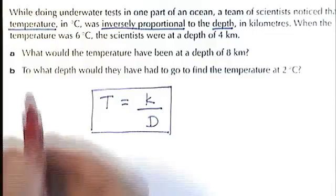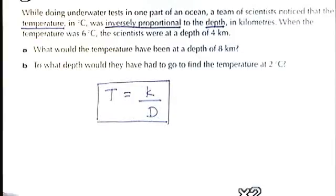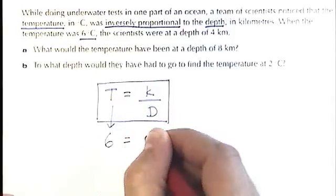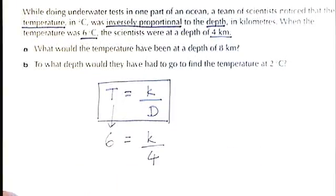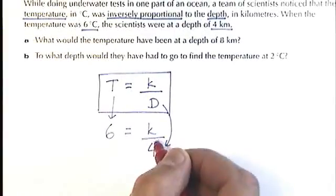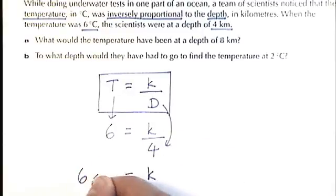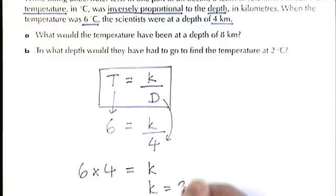Now our first job, before we can answer parts A and B, is to actually work out the value of K. To actually work out what this formula is that links these two variables. So to do that we need to use the 6 degrees centigrade, which is the temperature, and we need to use the 4 kilometers, which is the depth. So I substitute both of those numbers into my formula. There they are. T has turned into a 6, and the D has turned into a 4. And now I've got a little formula, a little equation, for working out the value of K. All I need to do is multiply this by 4, and I will get K equals 6 times 4. And 6 times 4 is 24.